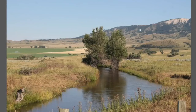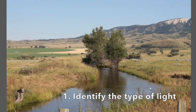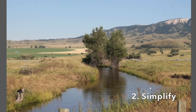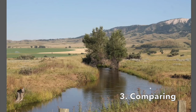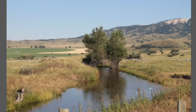There are several things to remember — three things. One is identifying the type of light. Two is simplifying. And three is comparing. When you compare in your painting, you're comparing the values between the shapes. You do that by not looking directly at what you want to mix, but looking at the value next to it.